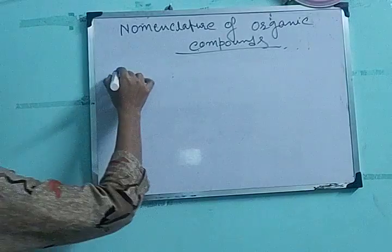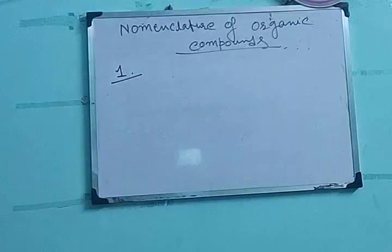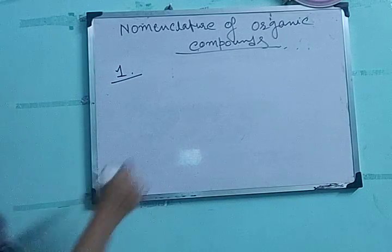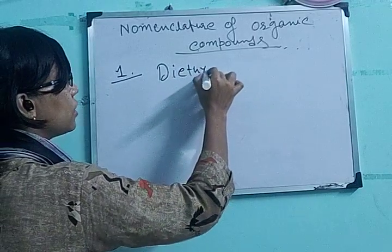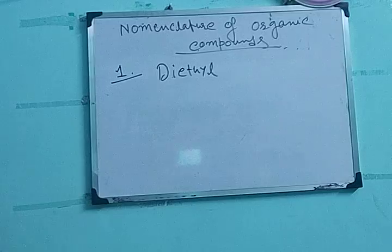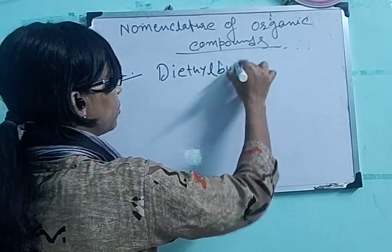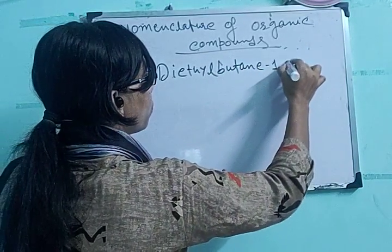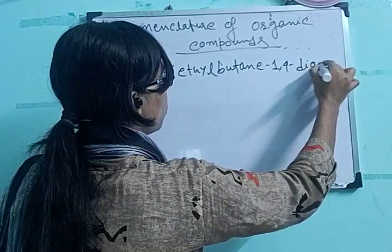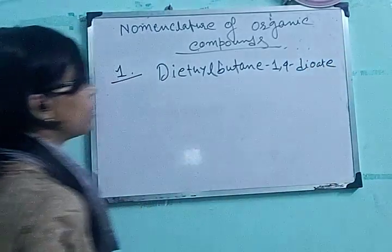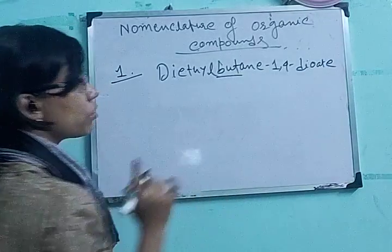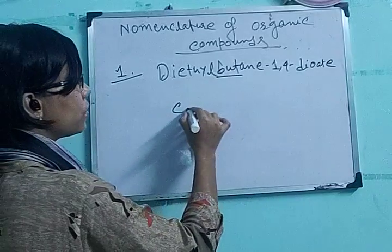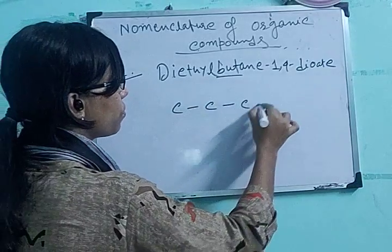The first example is diethyl butane-1,4-dioate. The IUPAC name given is diethyl butane-1,4-dioate. First, find the number of carbon atoms. It is butane, so the number of carbon atoms is 4. Put 4 carbon atoms.